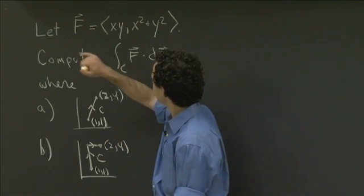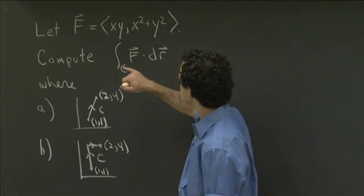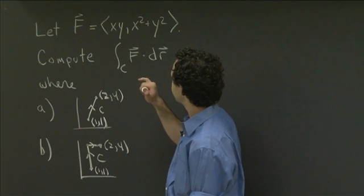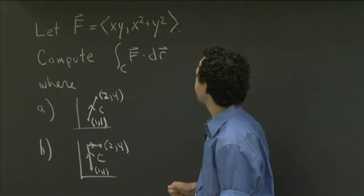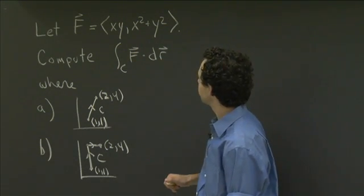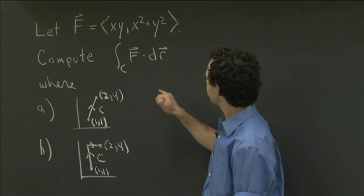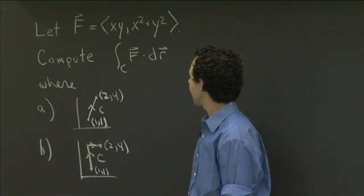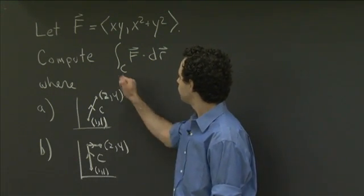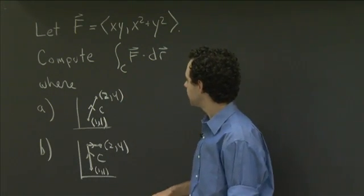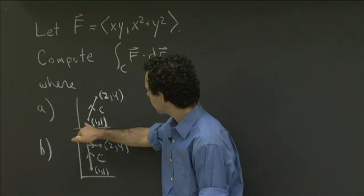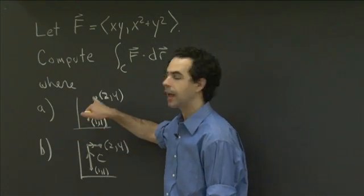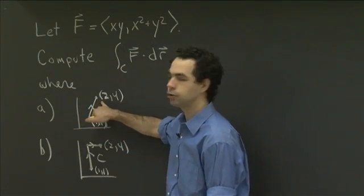I want F to be the vector field whose first coordinate is xy, and whose second coordinate is x squared plus y squared. What I'd like you to do is compute the line integral of F around two different curves C. Both curves start at the point (1,1) and end at the point (2,4).